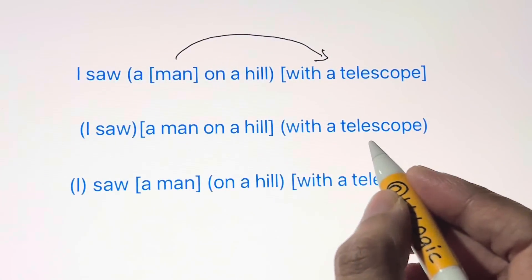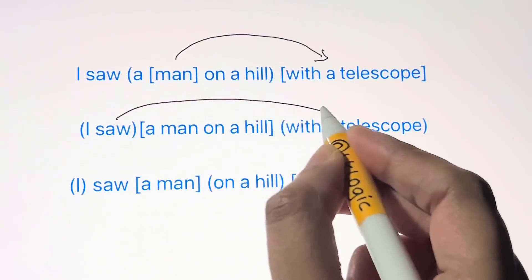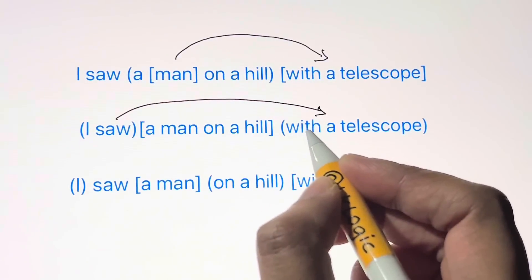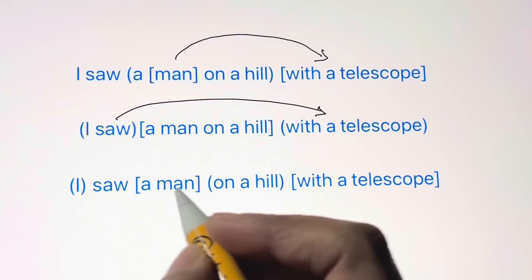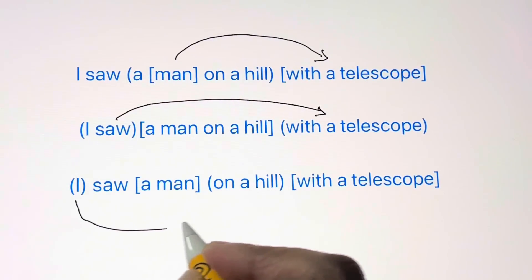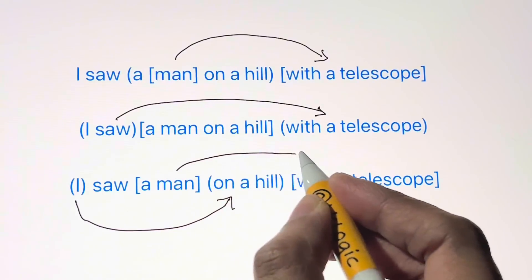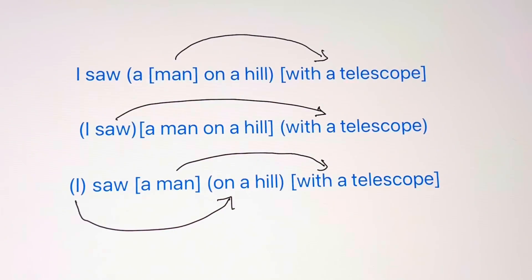I saw a man on a hill with a telescope, here I am on a hill and I saw a man with a telescope. Just as you have English expressions that can be interpreted in different ways, there are also mathematical expressions that can be ambiguous.